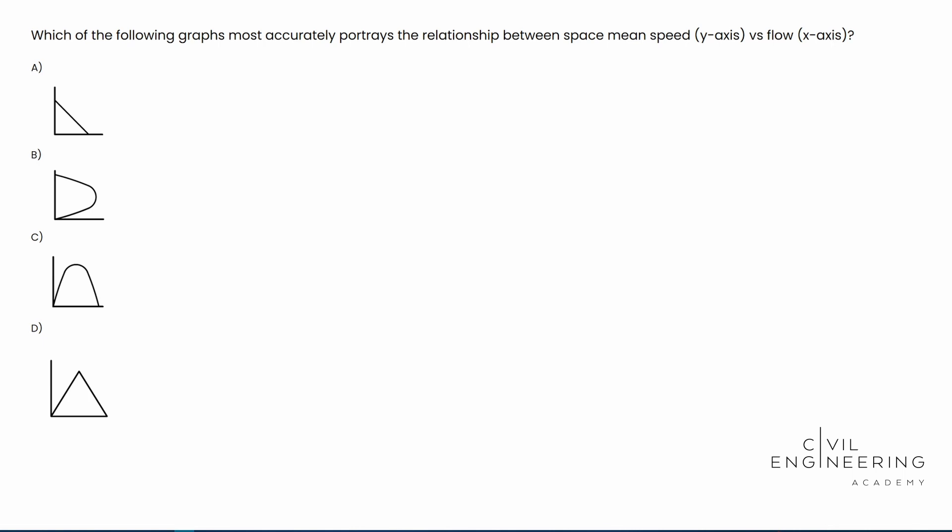So here's what the question says. Which of the following graphs most accurately portrays the relationship between space mean speed along the y-axis and flow along the x-axis? Typically, they don't have to tell you that. They can just say space mean speed versus flow. But in this case, they specify y-axis, x-axis. So we're going to go ahead and dive into this one.